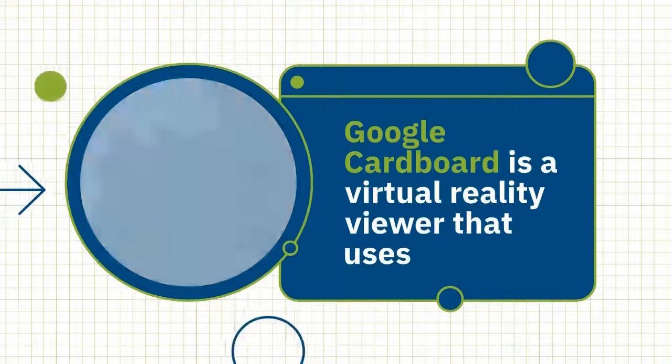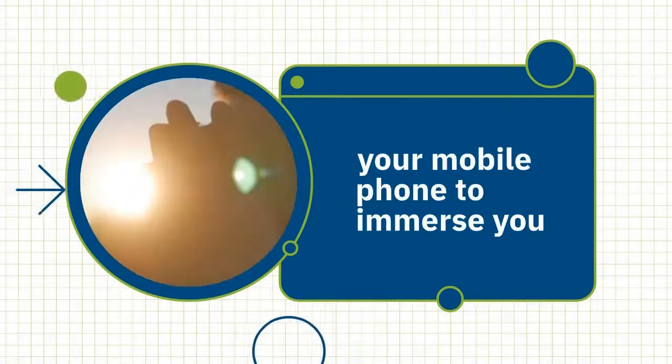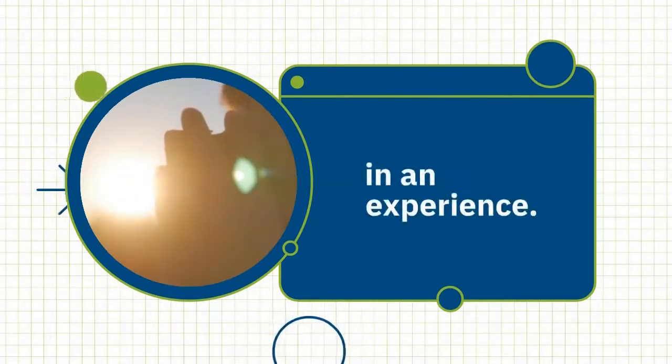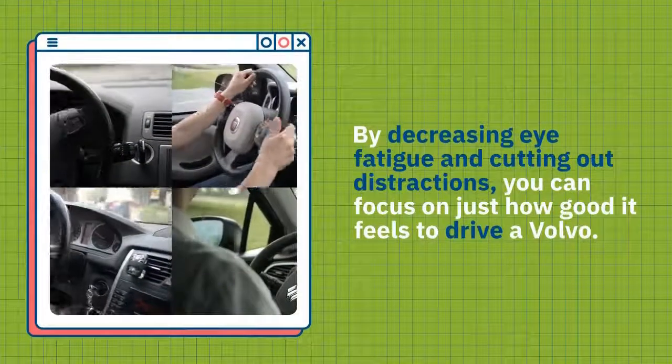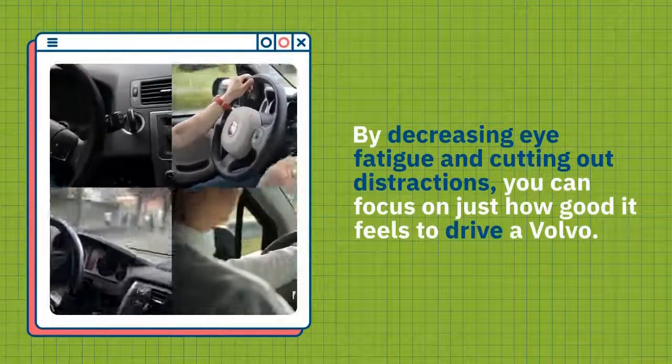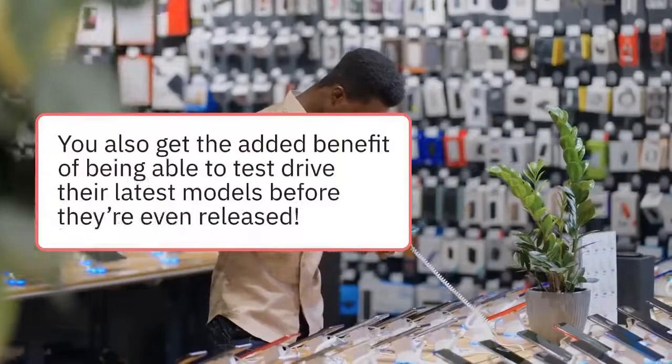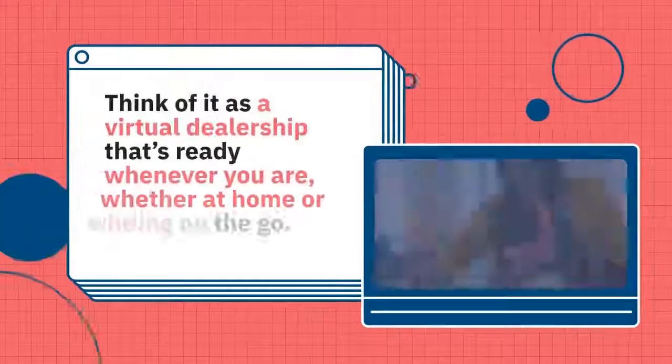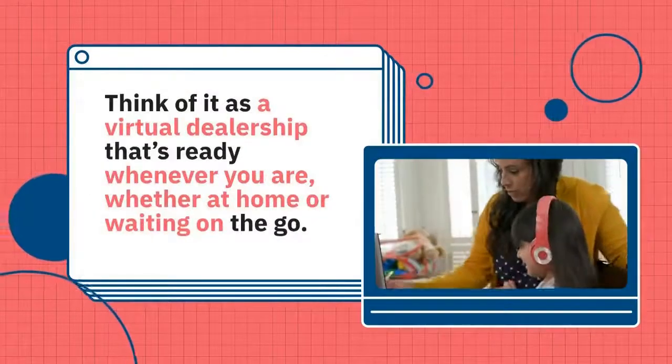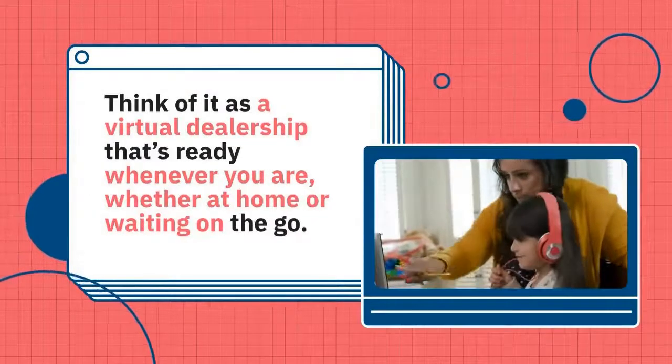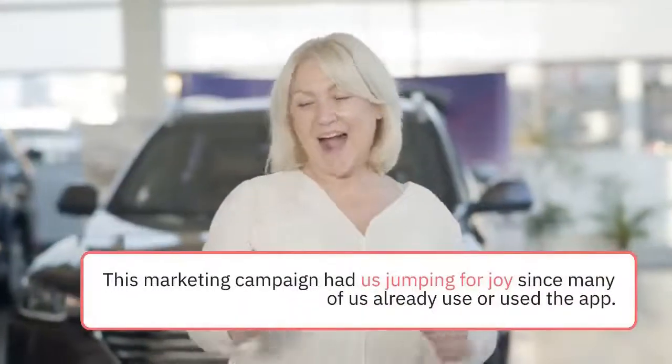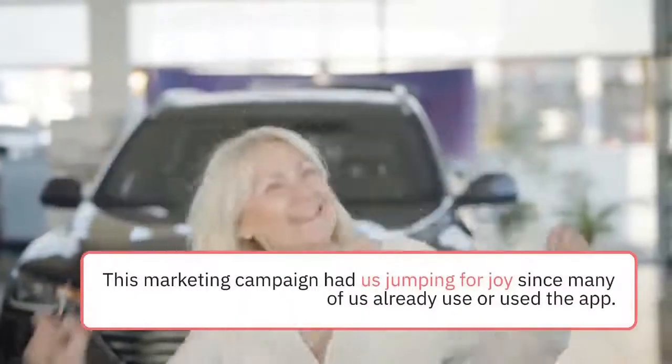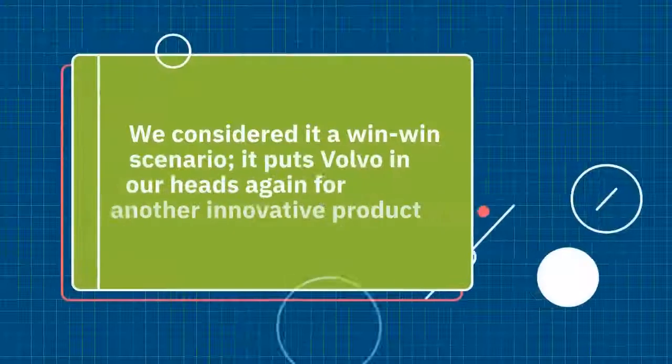Google Cardboard is a virtual reality viewer that uses your mobile phone to immerse you in an experience. By decreasing eye fatigue and cutting out distractions, you can focus on just how good it feels to drive a Volvo. You also get the added benefit of being able to test drive their latest models before they're even released. Think of it as a virtual dealership that's ready whenever you are, whether at home or waiting on the go.